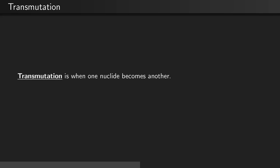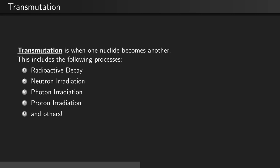Transmutation is when one nuclide becomes another. This includes the following processes. Radioactive decay, which is when a nuclide will randomly change into another nuclide with some probability.